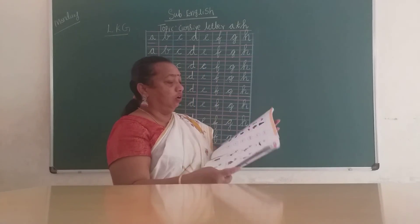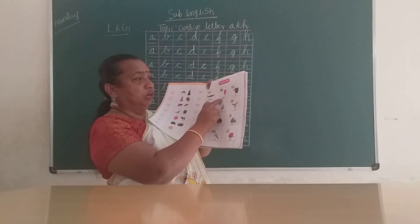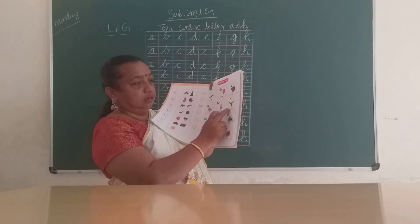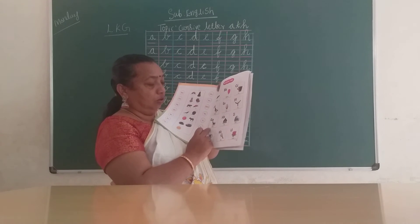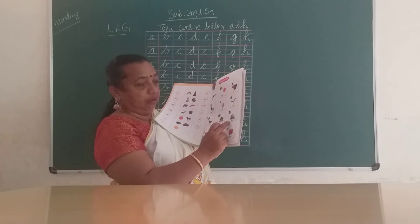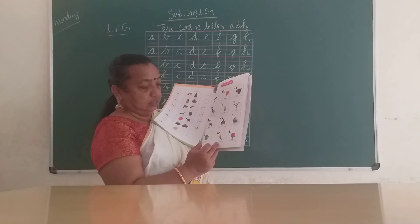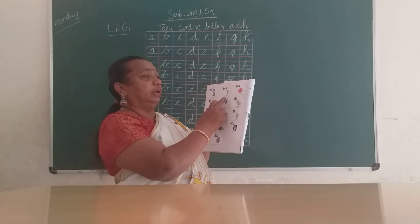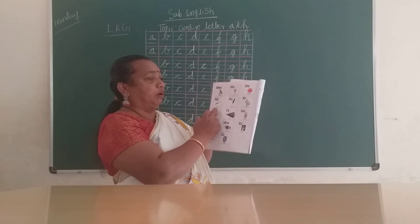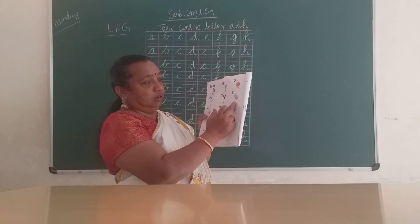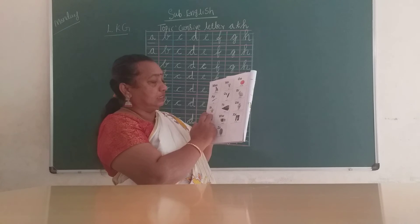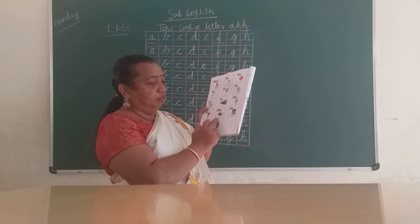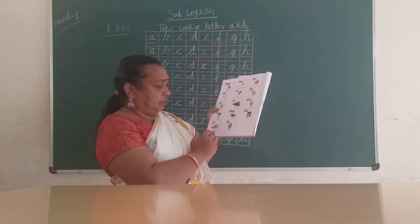A for aeroplane, B for balloon, C for cup, D — E — F for fan, G for goat, H for hat, I — J for jug, K for key, L for lotus, M for monkey, N for neck, O for orange, P for pen, Q for queen, R for rabbit, S for star, T for tree, U for umbrella, V for van, W for watch, X for x-ray, Y for yard, Z for zero.